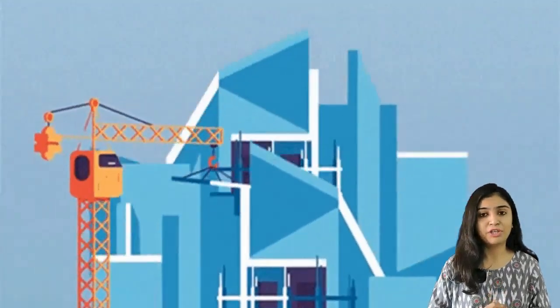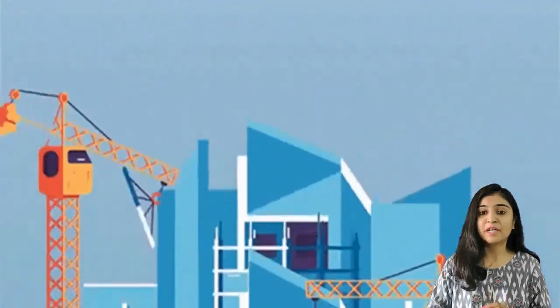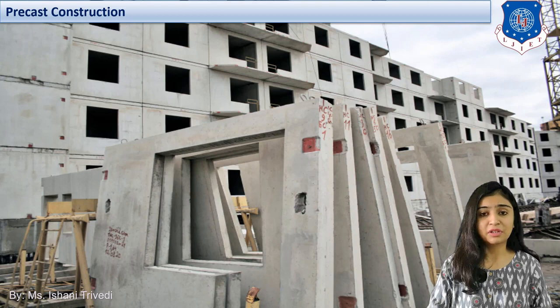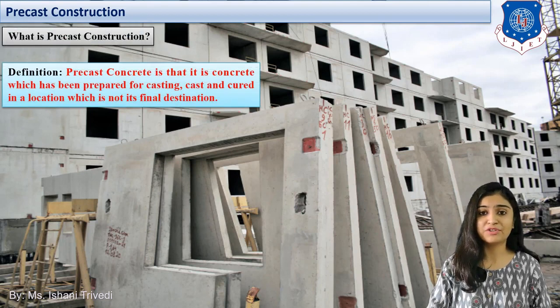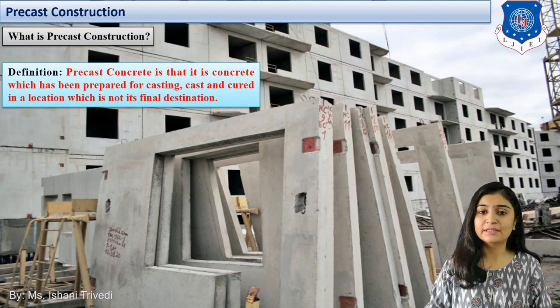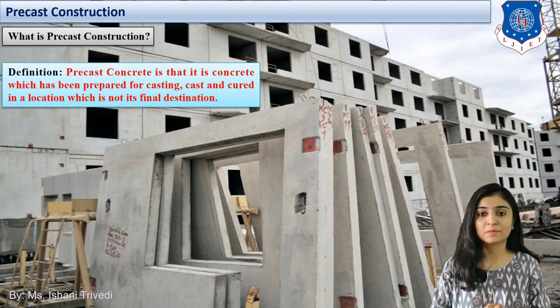This is how you are going to construct your building or structure. From the images flashing here, we can understand how fast construction work can take place with the help of precast elements. After precast elements comes another word: prefabrication. I am going to talk about two different things in all the sessions — one will be prefabricated structure and one will be precast structure.